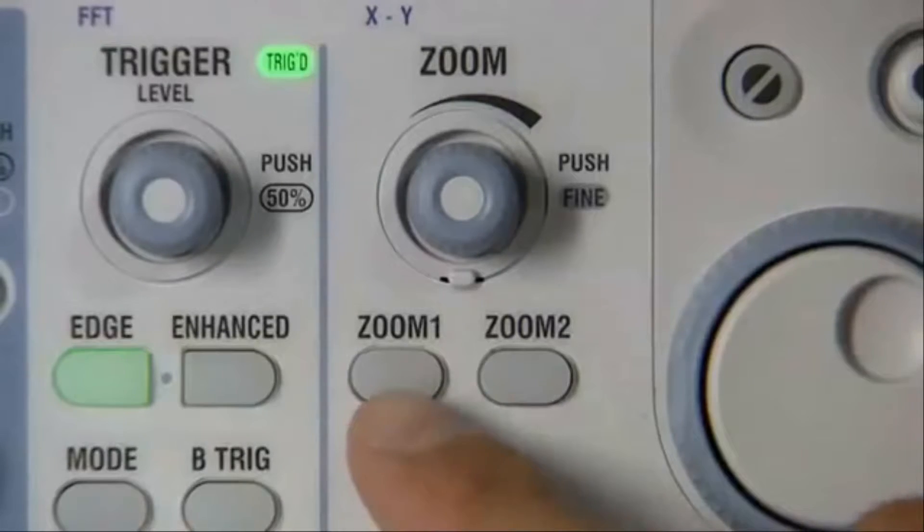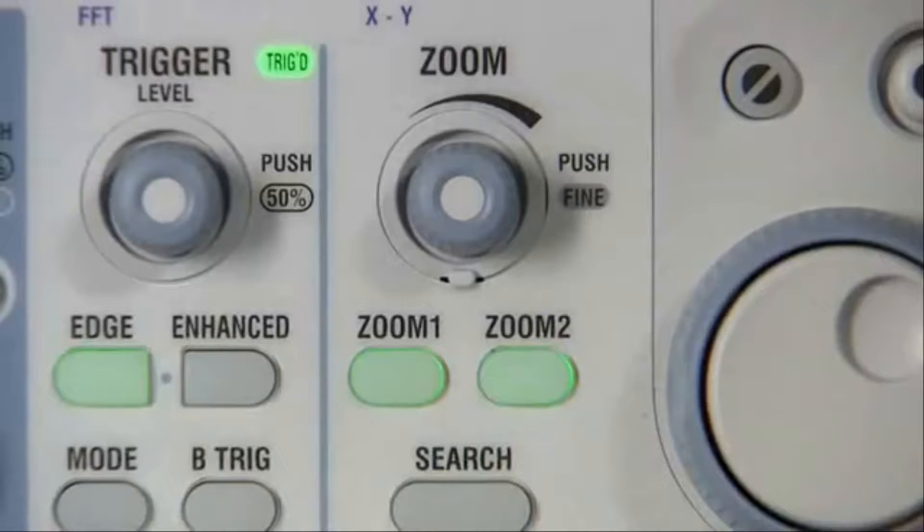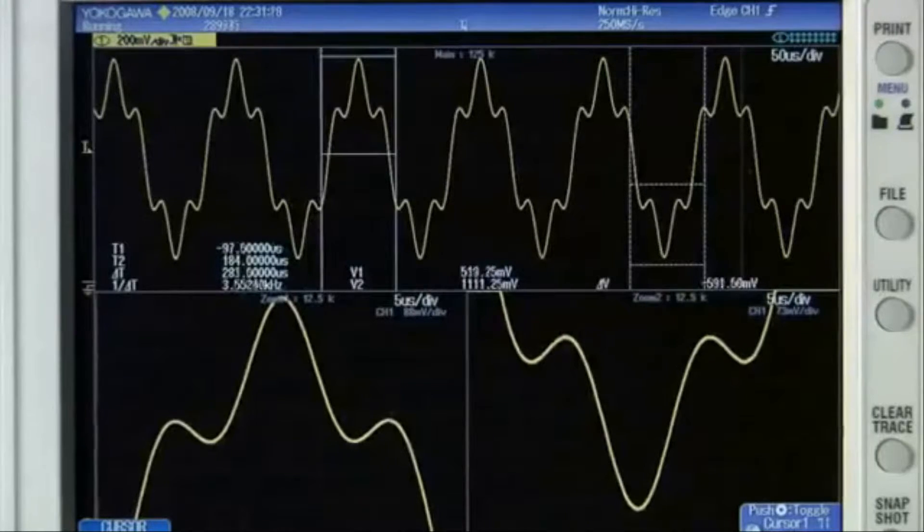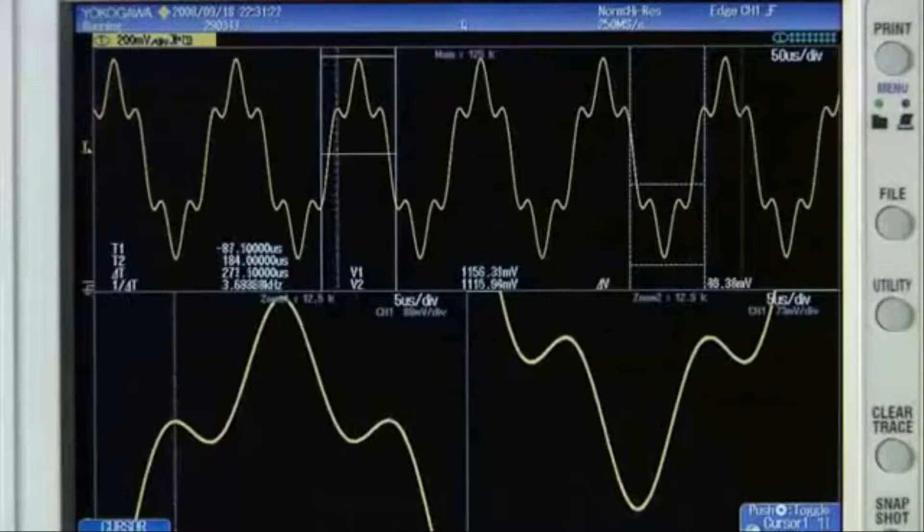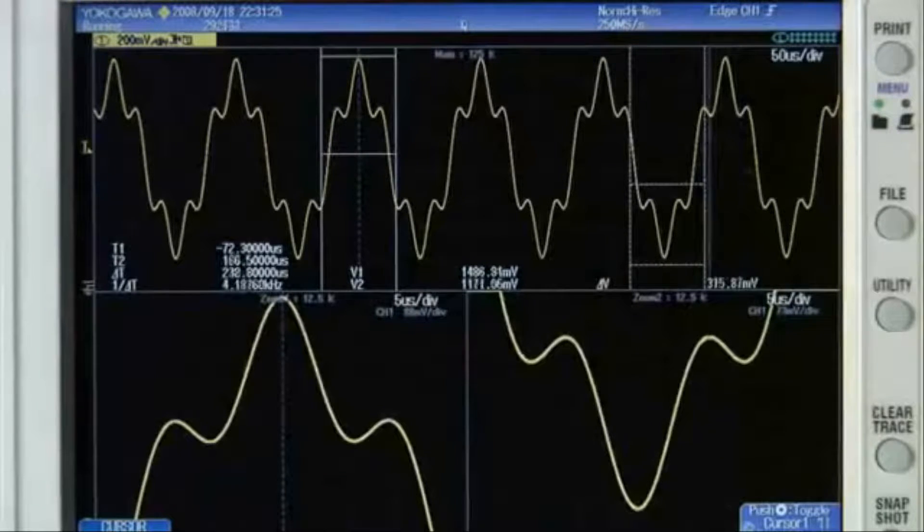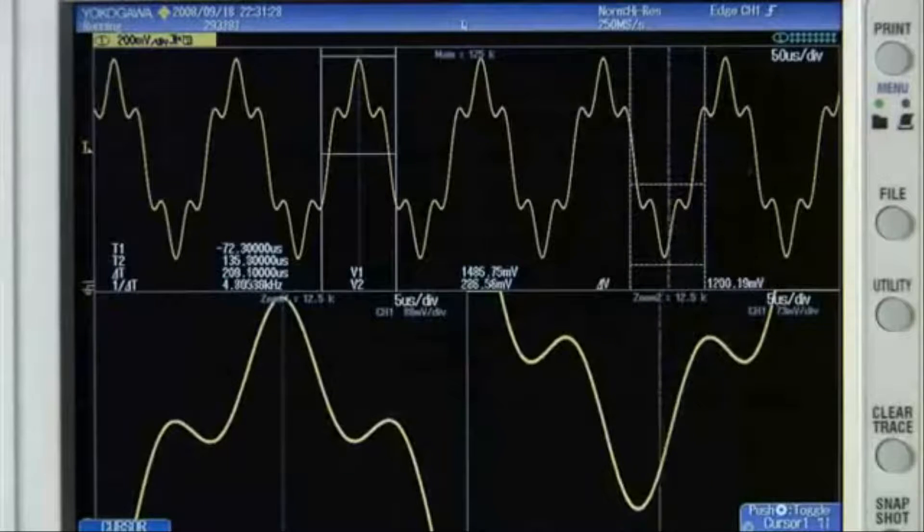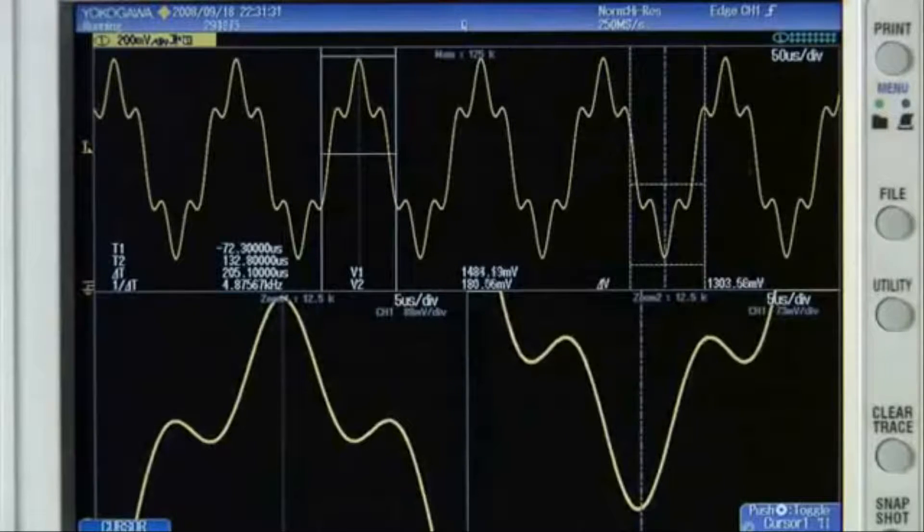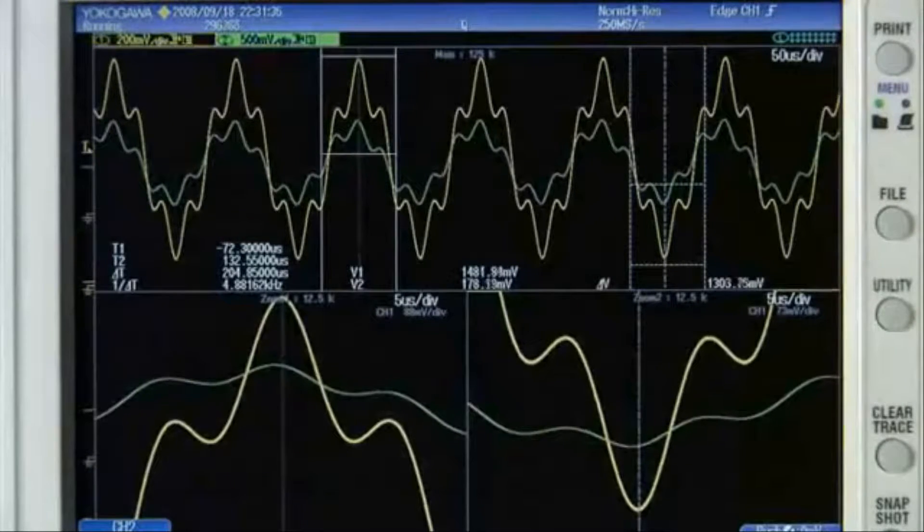The DLM2000 features two independent zoom windows, which, among other things, significantly enhance your vertical or horizontal cursor measurements. This allows you to investigate the cause and effect of waveforms at different places along the time axis, even when they are on separate channels.